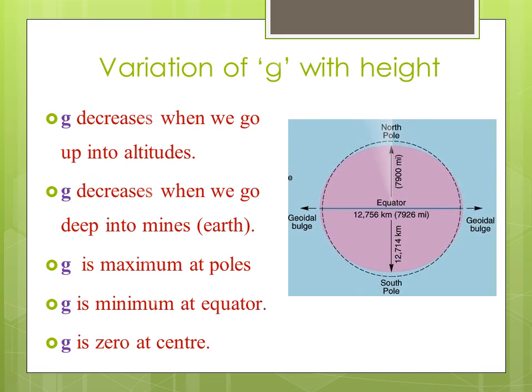Variation of g with height: Acceleration due to gravity decreases when we go up into altitudes, this is because g is inversely proportional to square of the distance, so as distance increases the acceleration due to gravity g decreases. As the depth increases the mass of the earth decreases. At the surface of the earth this value will be maximum because radius will be maximum. When radius becomes less, when depth increases, this value also decreases. Hence, acceleration due to gravity decreases with increase in depth.